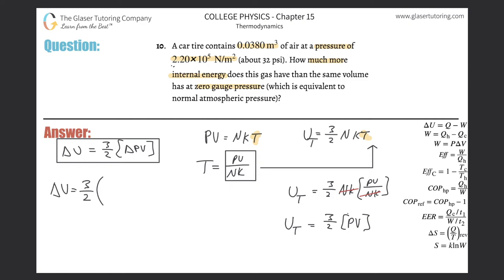So the pressure we'll assume starts at 2.2 times 10 to the fifth. And whether it starts at it or ends at it, it doesn't really matter. We're just trying to find the change so we can take the absolute value. But then it has zero gauge pressure. So zero gauge pressure, you have to know that means atmospheric pressure.